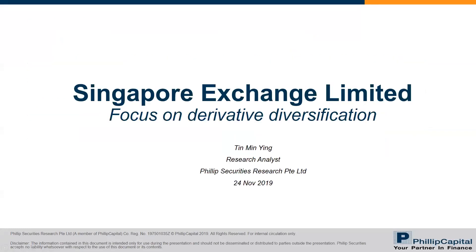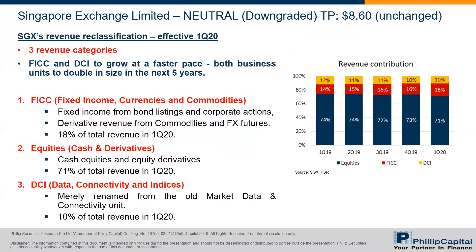For SGX this quarter, the main thing that happened was the revenue reclassification for the income statement. This was effective as of first quarter 2018. For those who don't know, the year-end for SGX is as of June 2019, so the months from July to September is our first quarter 2020. This new revenue reclassification kicked in this quarter, and now it's mainly in three revenue categories. The first is FICC — fixed income, currencies and commodities — which is mainly fixed income from bond listings and corporate actions, and for currencies and commodities it's derivative revenue. This contributes around 18% of total revenue in first quarter.